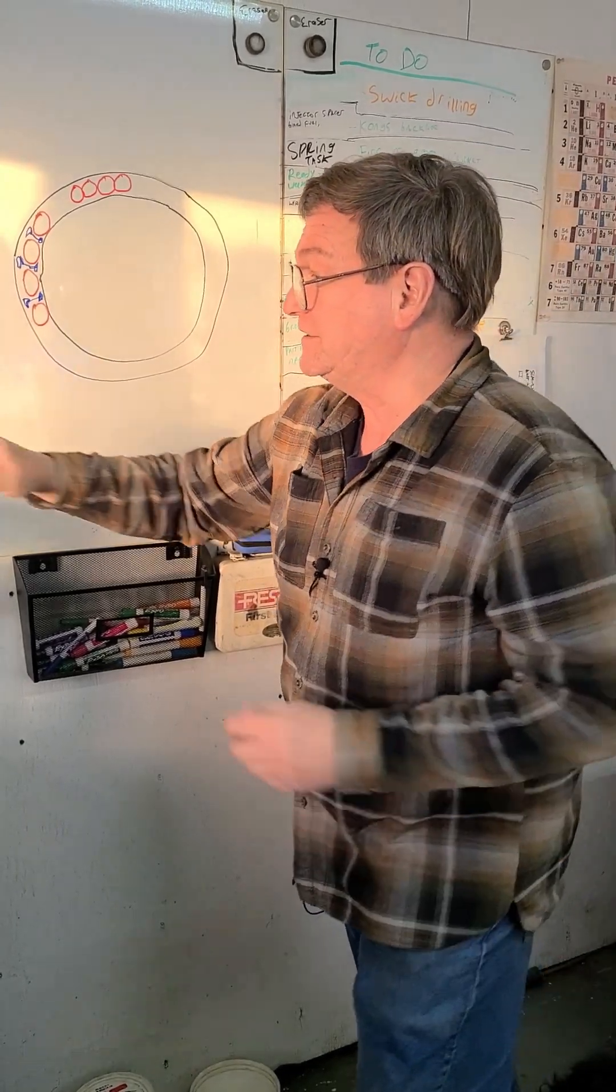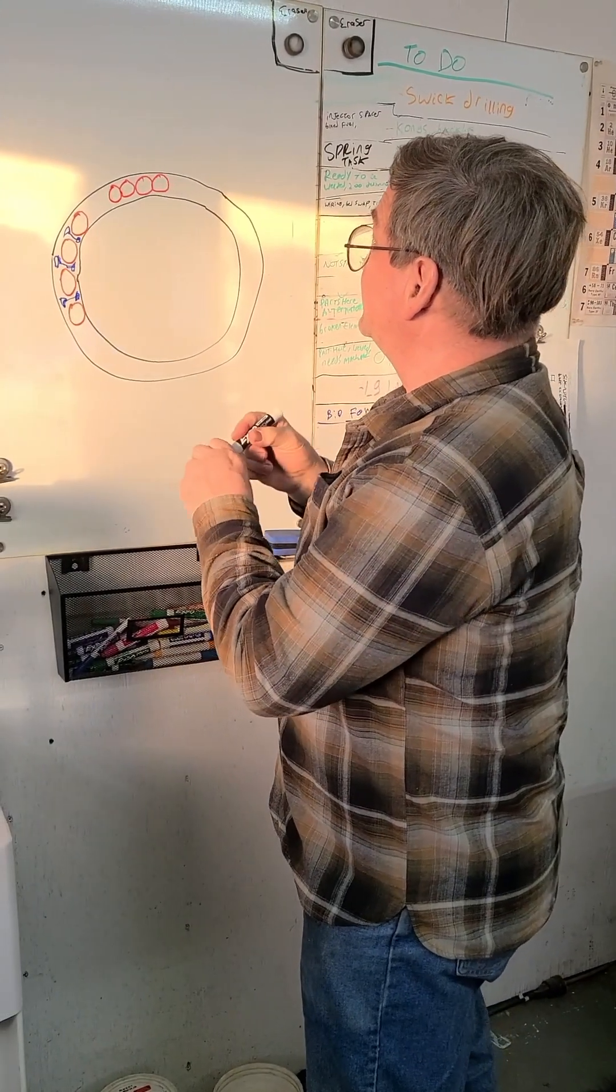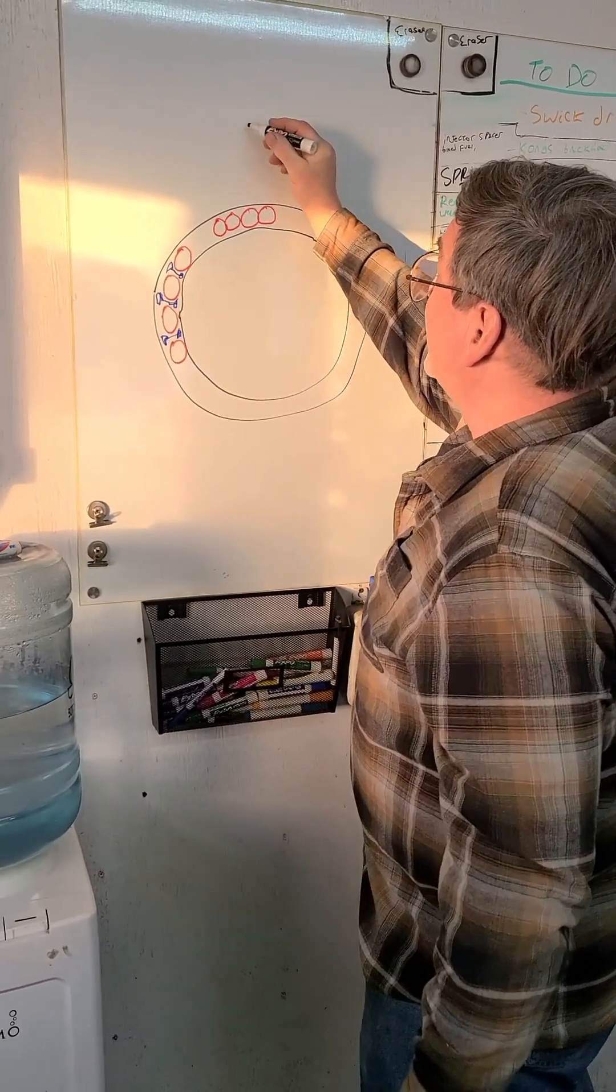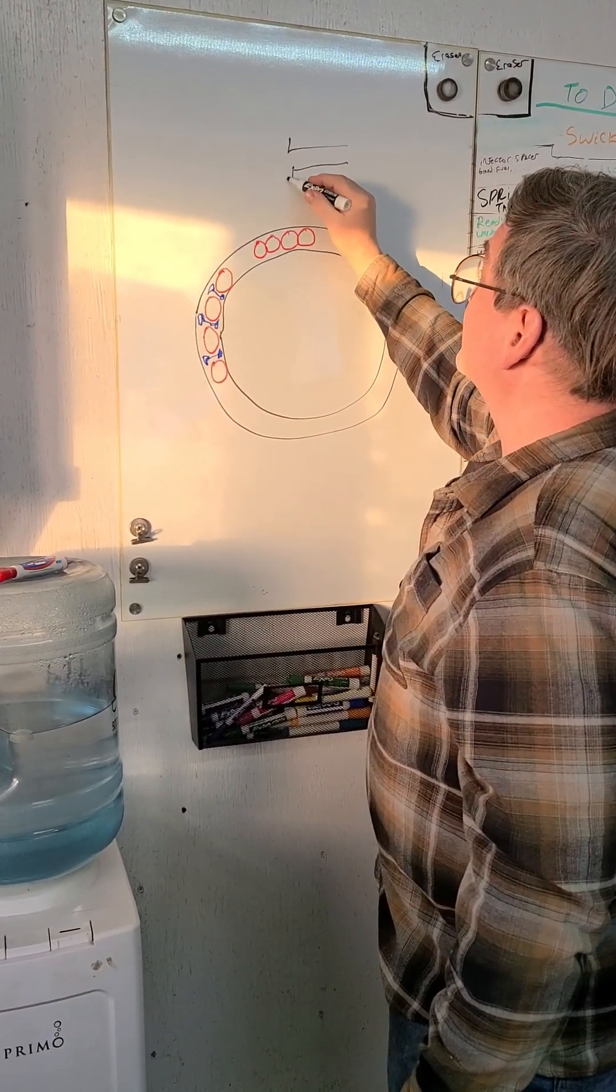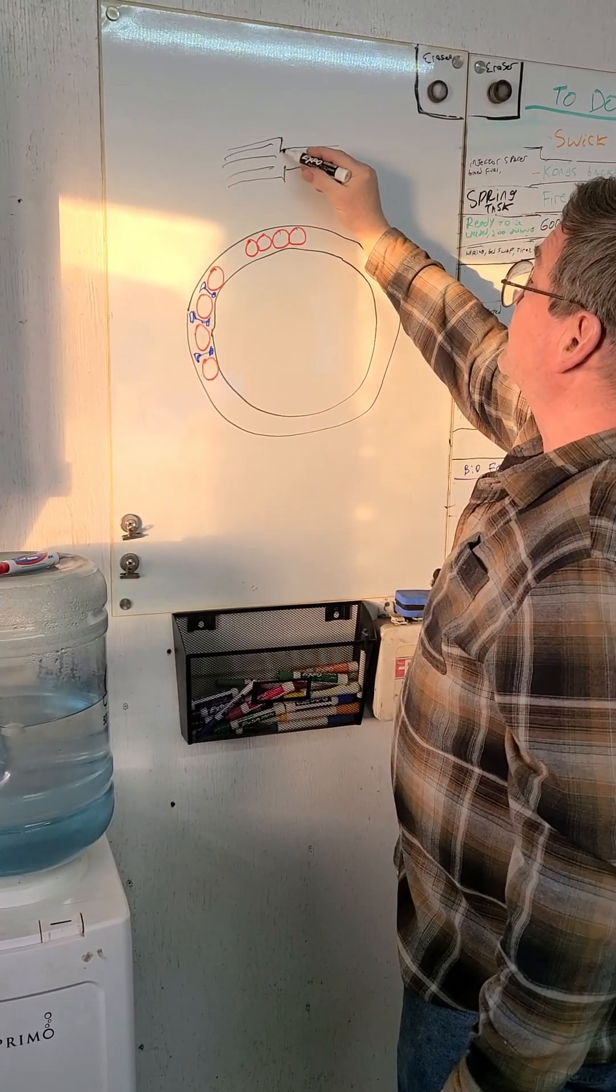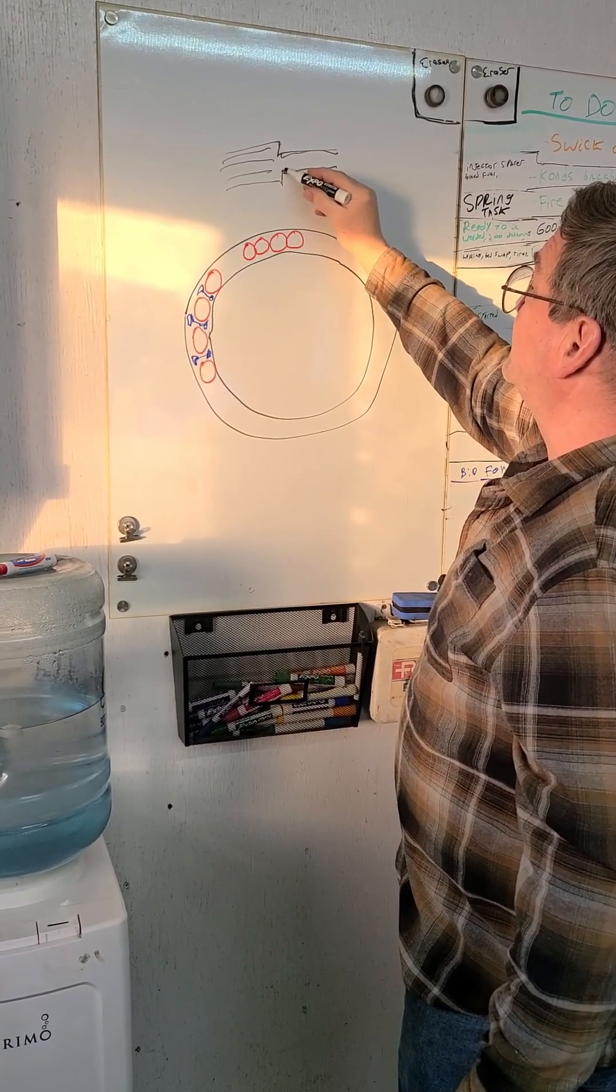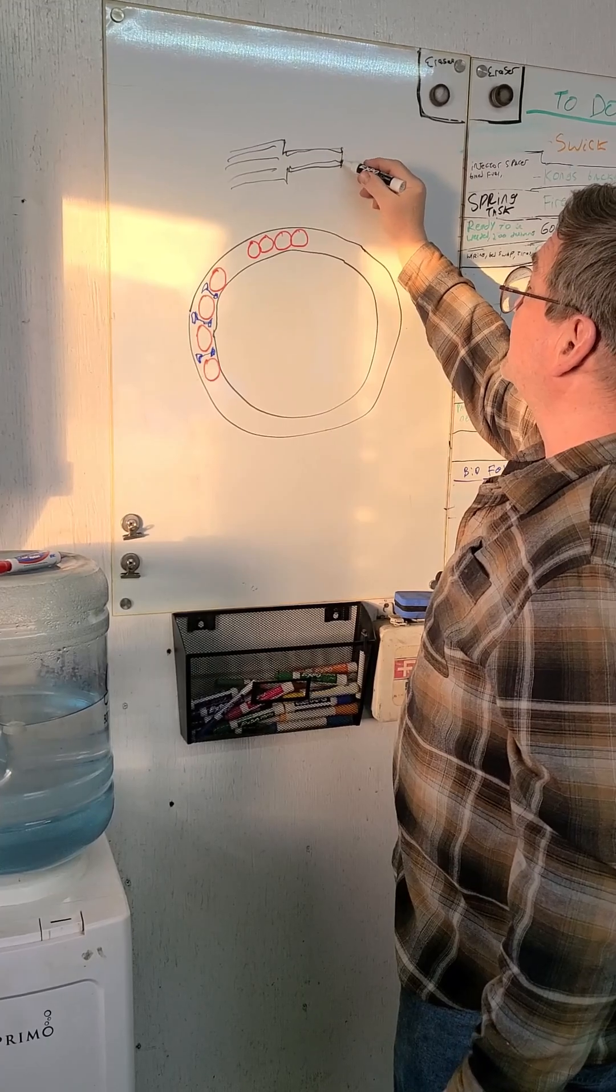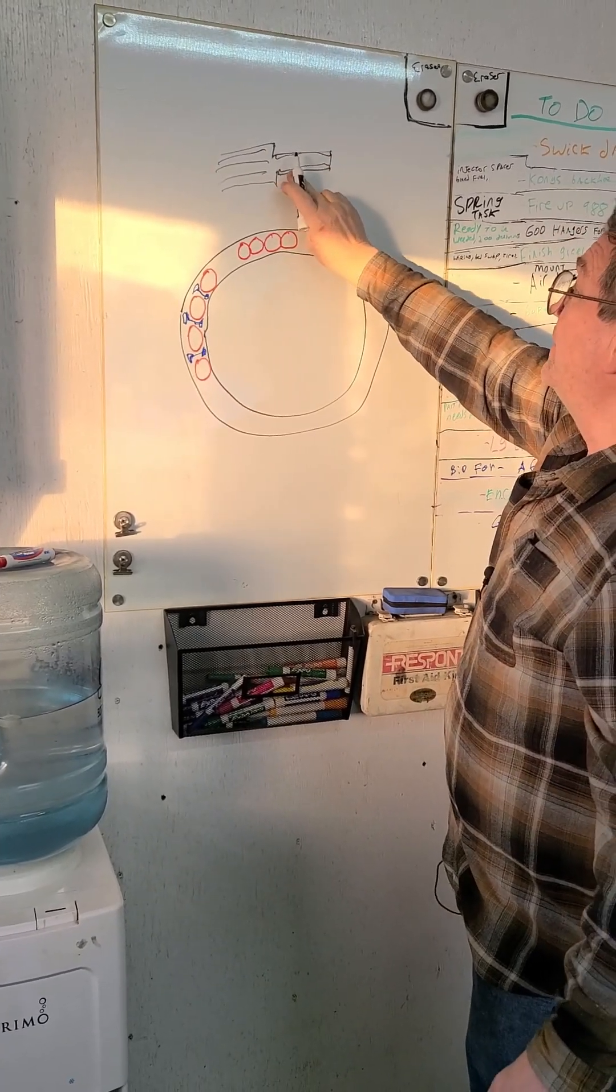One of the best ways to fix this is to take your shaft - you have the small area there, splines here - and you turn this down a little bit. Just undercut it a little bit to a smaller diameter, and then you make...